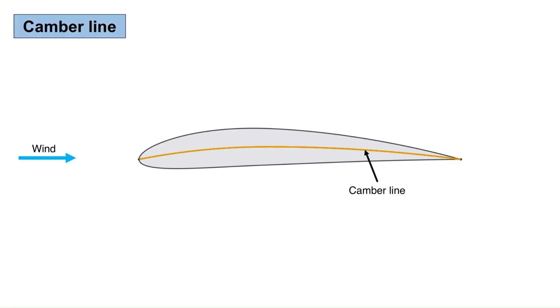The camber line is a curve that connects the leading edge point and the trailing edge point of the airfoil in such a way that at each point along its length, the camber line is the same distance from the upper surface of the airfoil as it is from the lower surface. The shape of the camber line has a huge effect on the airfoil's lift, drag, and pitching moment. We will discuss this in the next videos of the series.